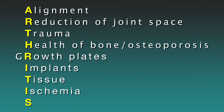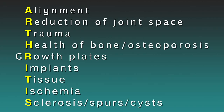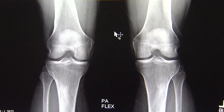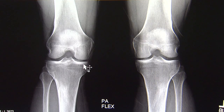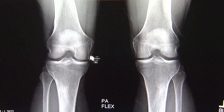The last letter is S, and that stands for sclerosis, spurs, or even bone cysts. In a knee that has arthritis, often you will see bone spurs at the edges of the bone. You'll see increased density right below the joint space, which is sclerosis, and sometimes you can see hollowed-out areas, which are evidence of bone cysts. These three things are all evidence of a knee that has arthritis.